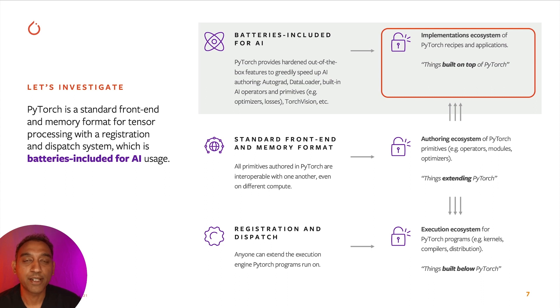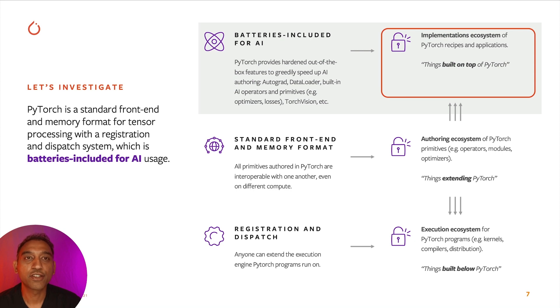For a batteries-included experience, we provide hardened out-of-the-box features to speed up the AI authoring experience. Some examples here are out-of-the-box autograd, data loaders, and domain libraries such as Torch Vision and Torch Audio. The goal of the batteries-included experience is to support our ecosystem libraries. These domain libraries provide a rich set of built-in AI operations and primitives so that researchers will be able to do state-of-the-art research and reproduce papers using common building blocks rather than rewriting their own.